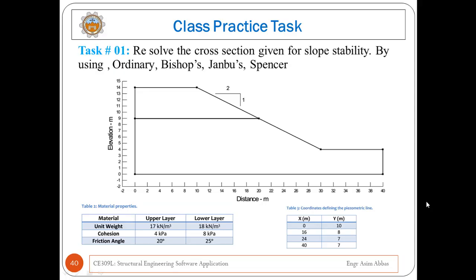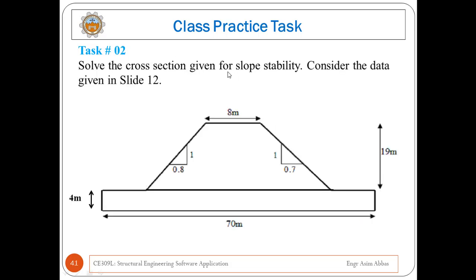Now the class practice tasks are given. Task one: resolve the question given below for slope stability by considering other limit equilibrium methods like Ordinary, Bishop, Janbu, and Spencer. Task two: solve the question given below for slope stability and consider the data given in slide 12.